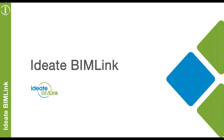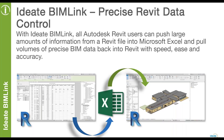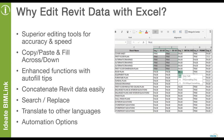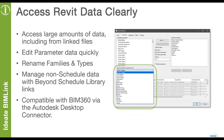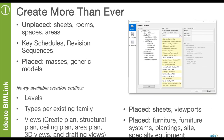Without further ado, I'm going to start with ID8 BIMLink and go through each product with demonstrations. ID8 BIMLink is all about taking your Revit model data out to Microsoft Excel, where you can view and edit that data, then bring it back into your Revit model to make updates. We picked Excel as the medium for editing because Excel has been around forever and has superior editing tools — copy-paste, fill-down, concatenate data, find-replace, translate to other languages, and so forth.